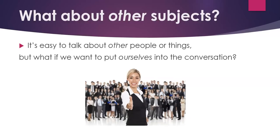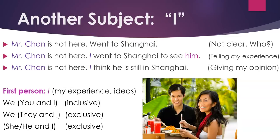What about other subjects? It's easy to talk about other people or things, but what if we want to put ourselves into the conversation? Another subject is I. This is the first person. Let's go back to the previous example. 'Mr. Chun is not here. Went to Shanghai.' It's not clear. Who went to Shanghai? Well, we could say: 'Mr. Chun is not here. I went to Shanghai to see him.' We're changing the subject — in this case, I'm telling about my experience. I could also say: 'Mr. Chun is not here. I think he is still in Shanghai.' In this case, I'm giving my opinion. When I talk about my own experience or my ideas, I use the first person: I.